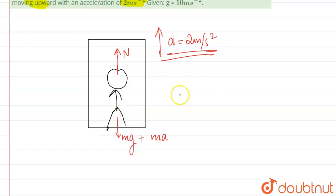So from here we can get normal force is equal to mg plus ma. And this normal force only we have to find because normal force only is the force that the man is exerting on the floor.